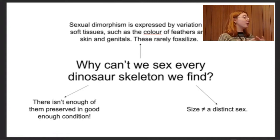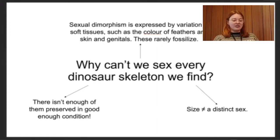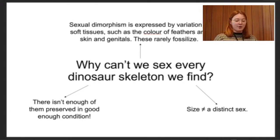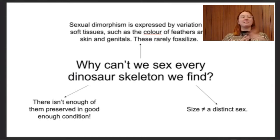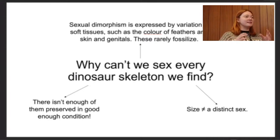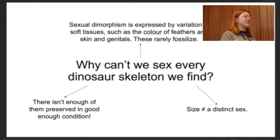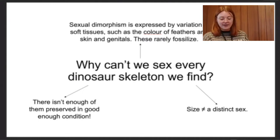We need a sample size big enough to identify distinct variation between individuals within a population from a bone bed. Also, size doesn't necessarily indicate a specific sex — as we saw with spiders, males are much smaller than females, whereas in lions the males are bigger. There isn't a distinct correlation you can see just from looking at bones, and because the sample size of dinosaurs isn't big enough, we don't necessarily know that size equals anything apart from age or just the maximum size of that animal.